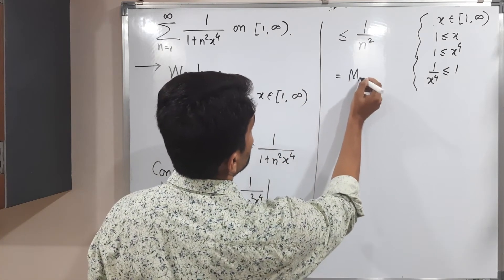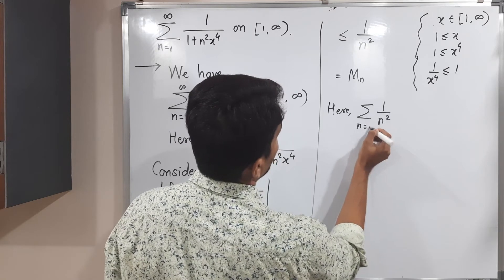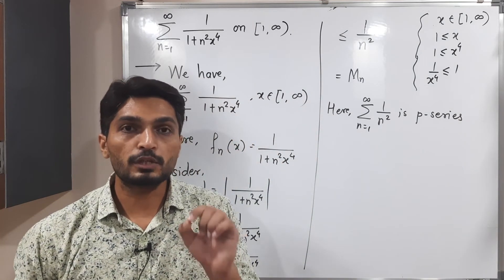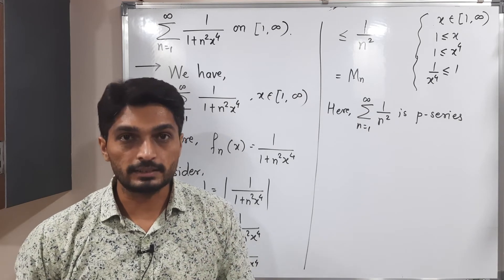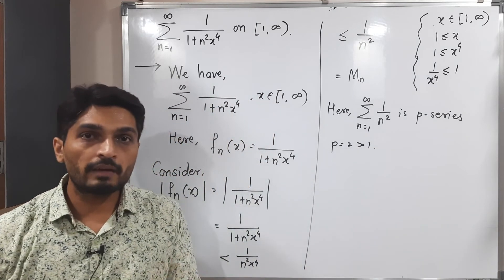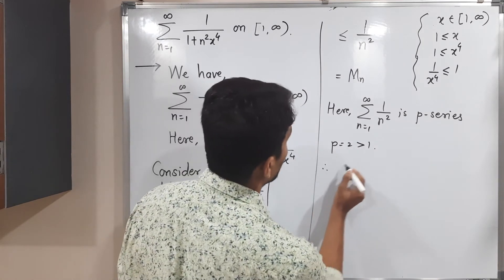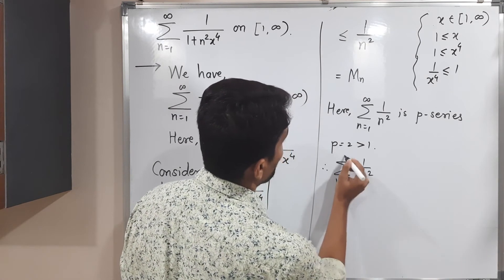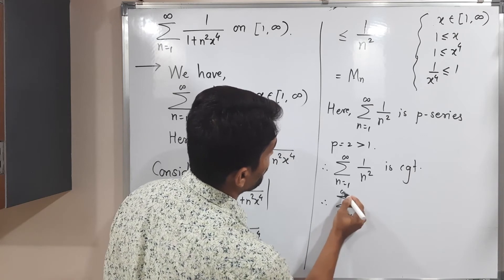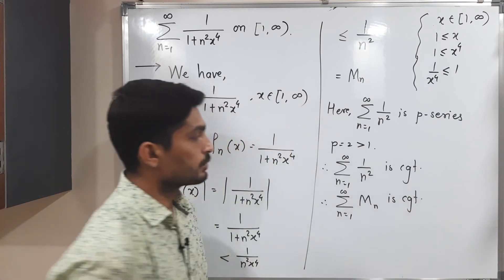So Mn = 1/n². Now summation 1/n² is a p-series. Recall that summation 1/n^p is called a p-series; here p = 2, which is greater than 1. When p > 1, the p-series is convergent. Therefore summation n from 1 to infinity of 1/n², which is summation Mn, is a convergent series.